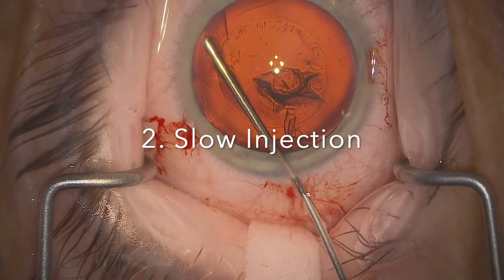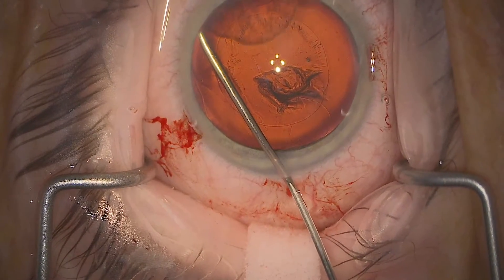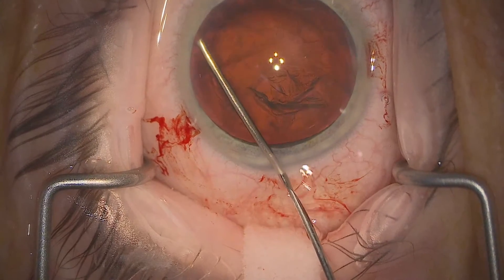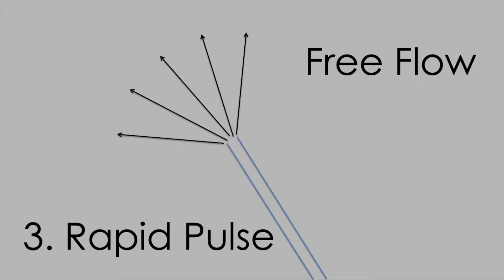So slow injection once you've defined your plane. A good sign you've got free flow is when the anterior capsule pops out and you're ready to pulse around the back. Now let's pause for a moment to consider why free flow is so important to the rapid pulse phase of hydrodissection.